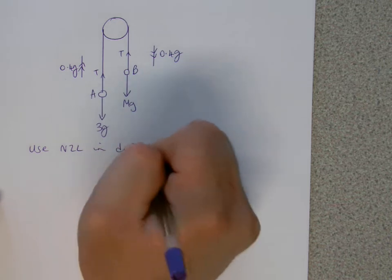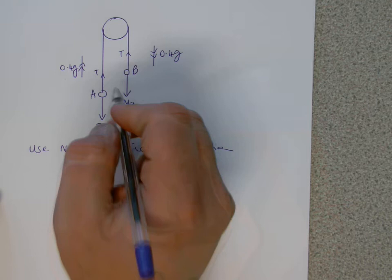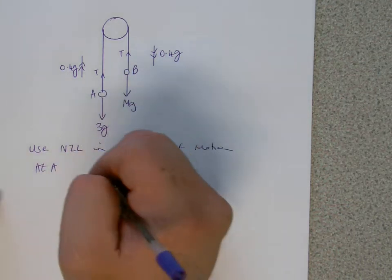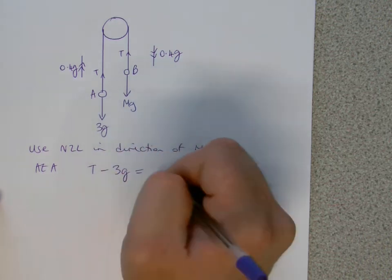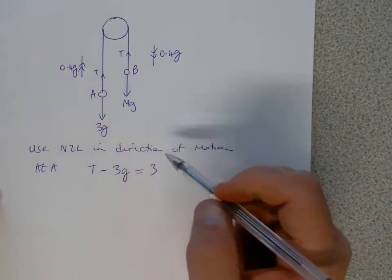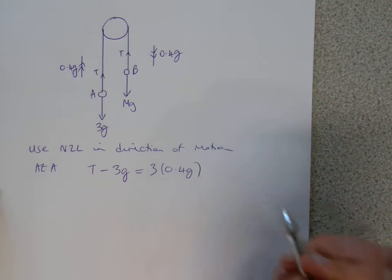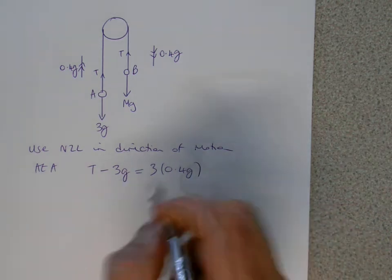And if we resolve at A to start with, now, because it's going upwards, T will be pulling it, pulling the weight, so we take away then the weight, and that will equal then mass, which is 3 kilograms, times then the acceleration, which of course is 0.4G. So even straight away from that, we'll be able to work out that tension, so let's go for it.